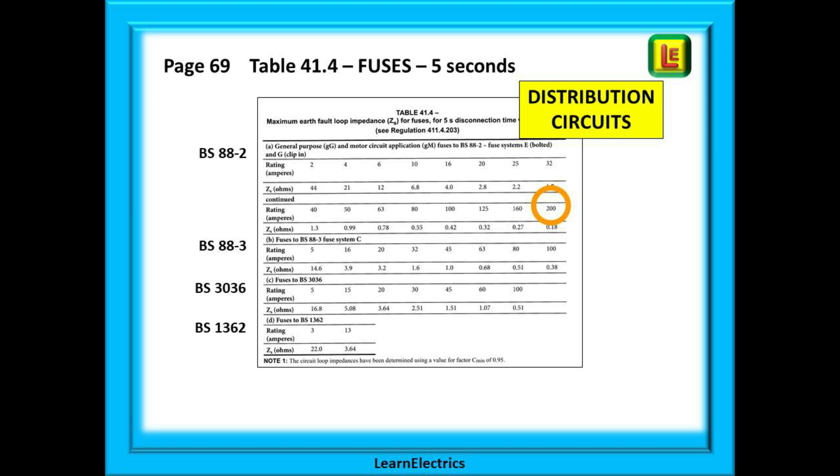Moving on to page 69, we find table 41.4, the table for fuses with a 5 second disconnection time for distribution circuits. There are four types of fuse as before. But notice in the orange circle, the fuse sizes now exceed 63 amps. Because this is a distribution circuit. And this one is showing 200 amps.